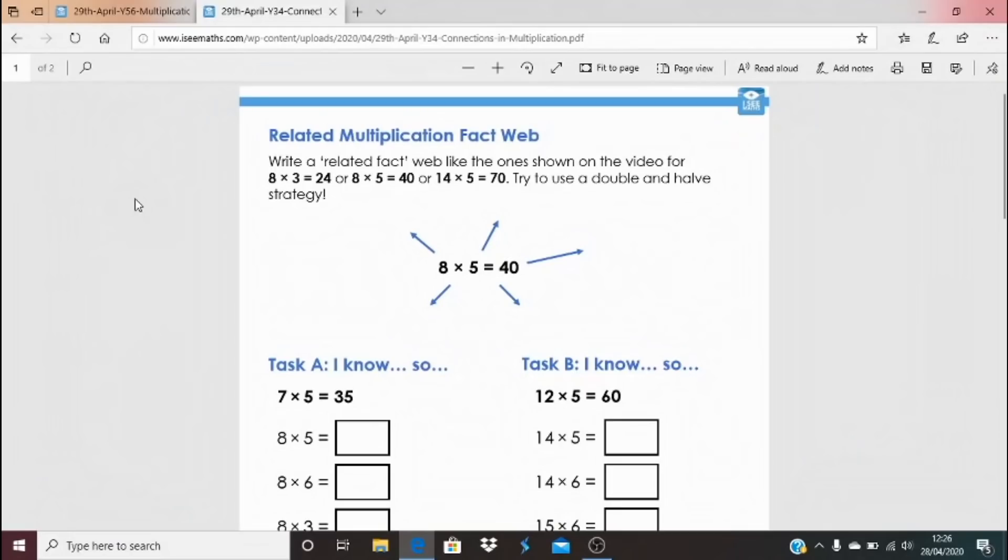So everyone, for your independent task, the key thing is that you see the connections between multiplication facts. Now you could use any of these tasks to help you to do that. I don't mind which number range you use, but the main thing is you understand how multiplication facts are connected.